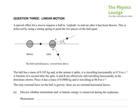Let's carry on. The ball has a mass of 0.105 kilograms and at the instant it splits, it's travelling horizontally at 67 metres per second. A fraction of a second after the split, A and B are effectively still travelling horizontally in the directions shown. Piece A has a mass of that. Piece B is travelling at 80 metres per second. The only external force on the ball is gravity. There are no external horizontal forces. There are internal forces though, clearly.